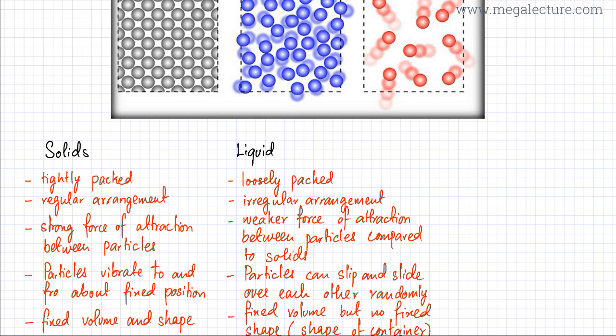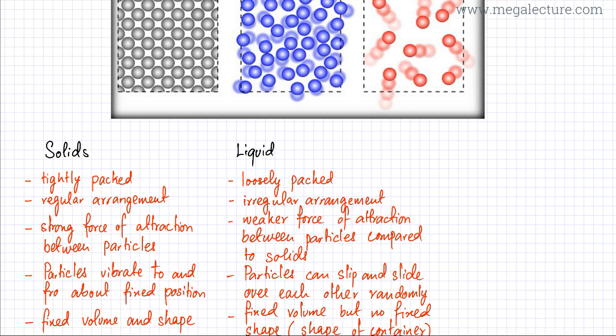Because particles are moving around, slipping and sliding over each other, the arrangement is more irregular. The force of attraction between particles is weaker compared to in solids, because now the particles are energetic and can overcome the force of attraction that was holding them together. The particles can slip and slide over each other randomly, but not freely — they cannot move in all directions. You can't have particles in liquid state jumping around in all directions; they can just slip and slide past each other.